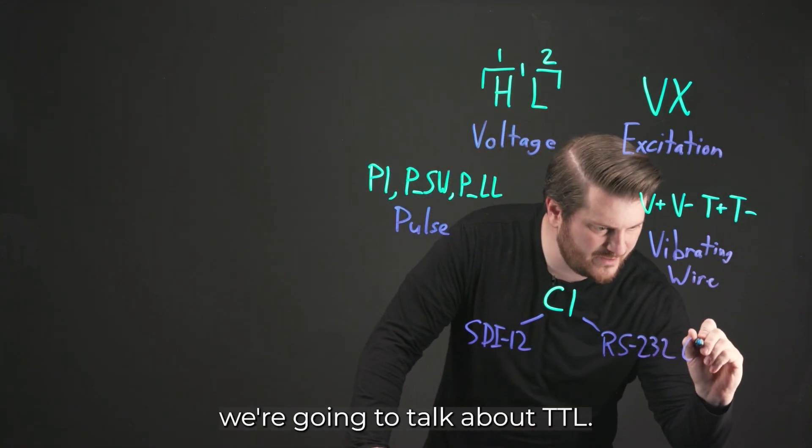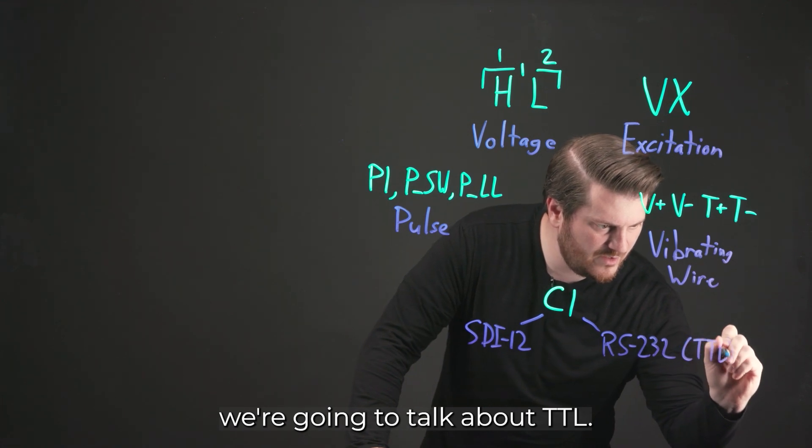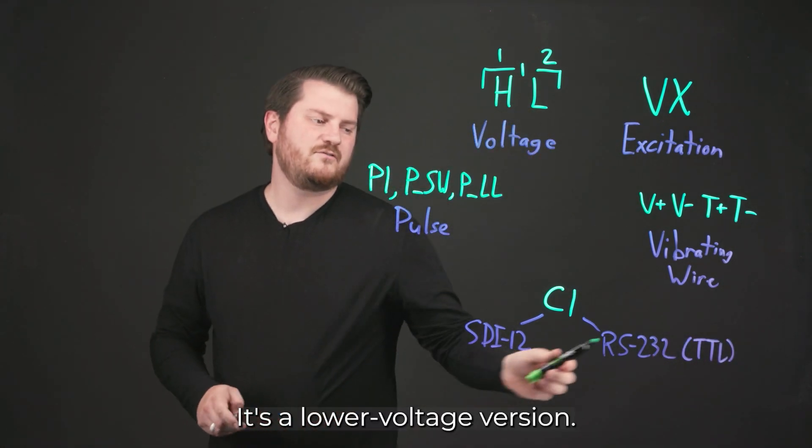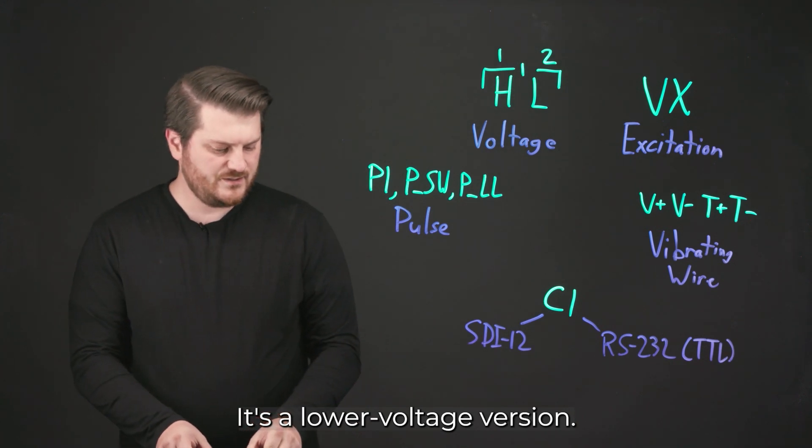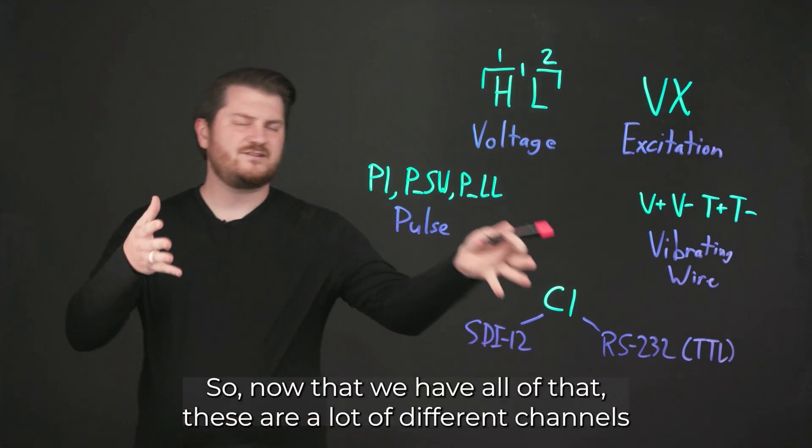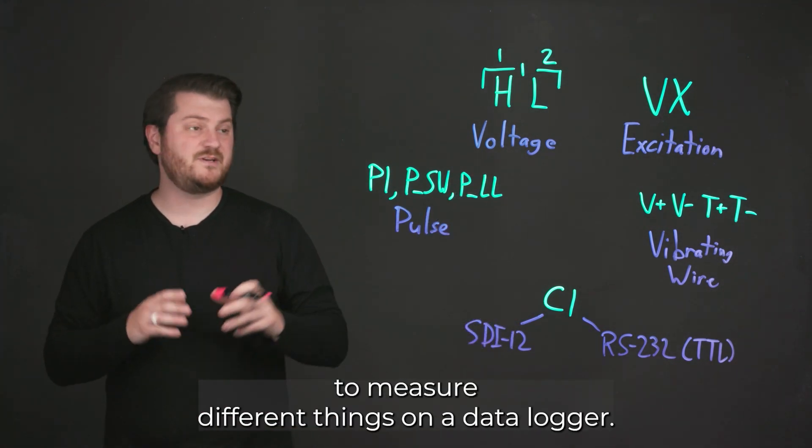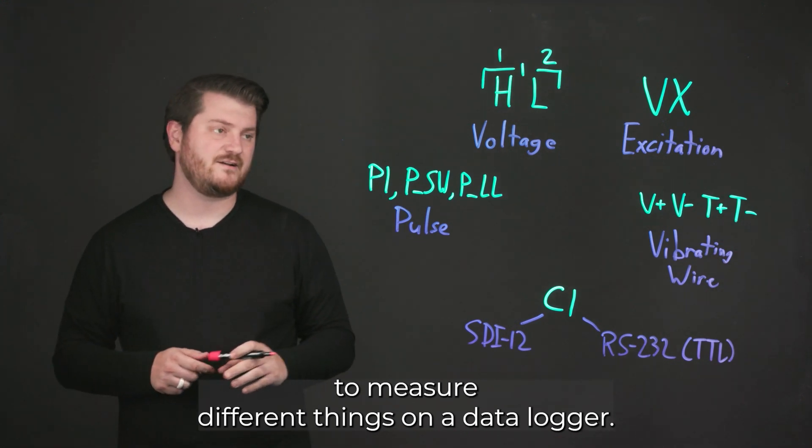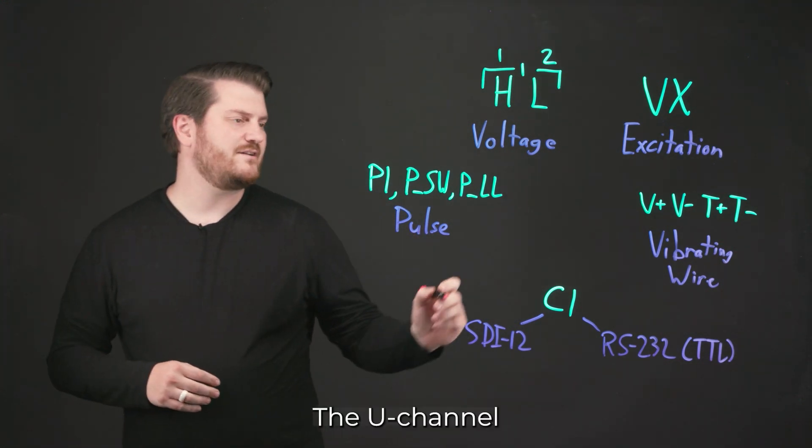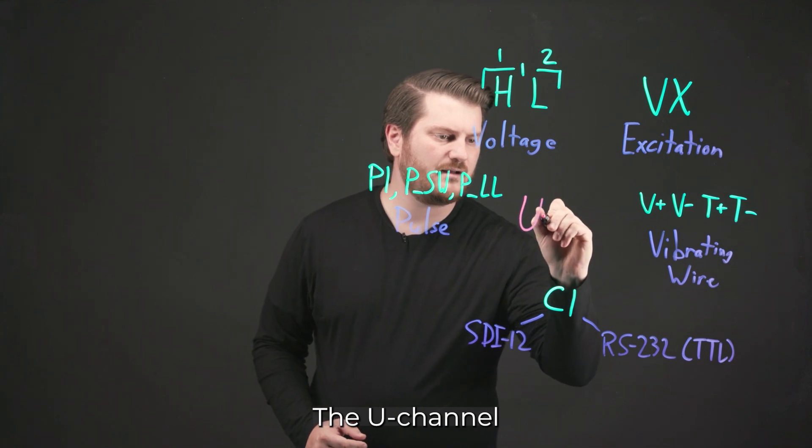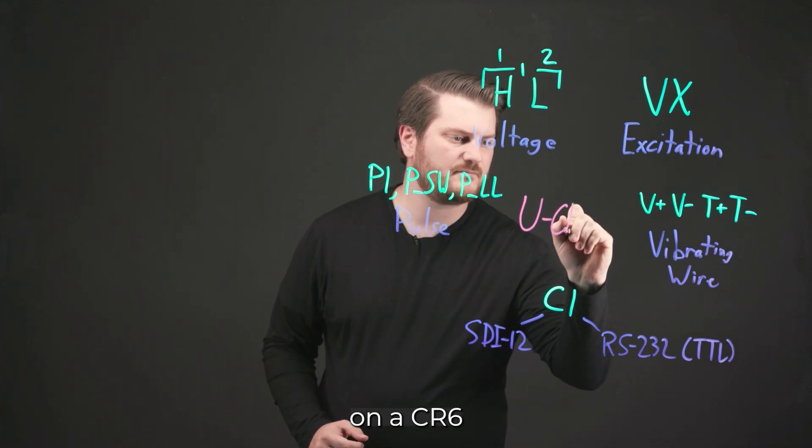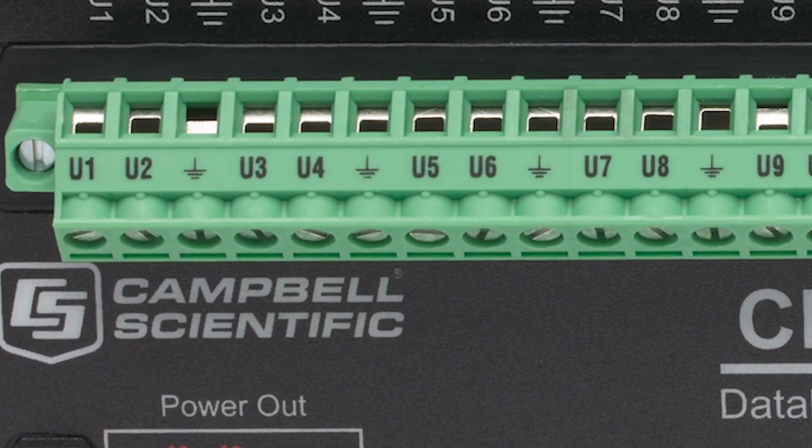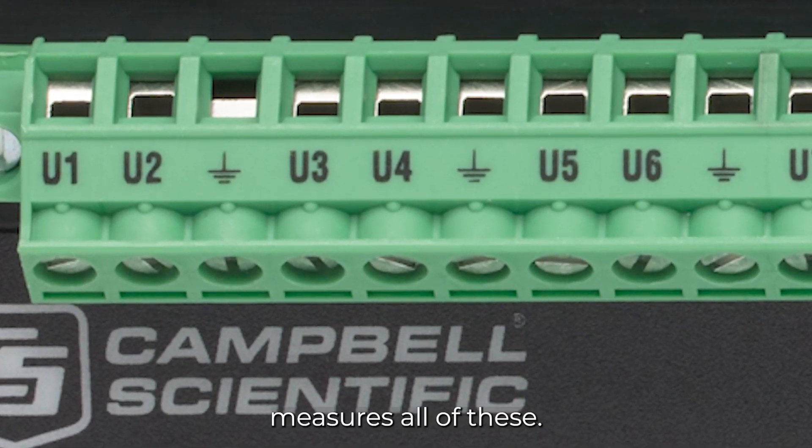Specifically for this, we're going to talk about TTL, so the lower voltage version. So now that we have all of that, these are a lot of different channels to measure different things on the data logger. The U-channel on a CR6 measures all of these.